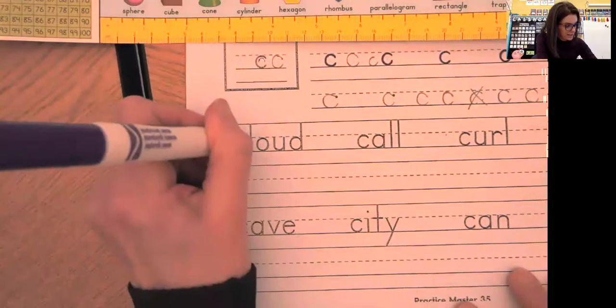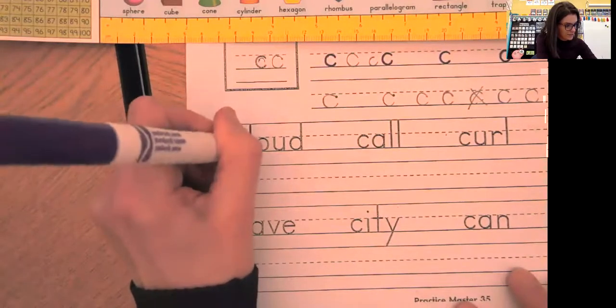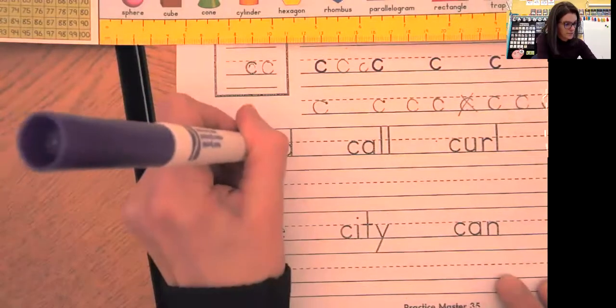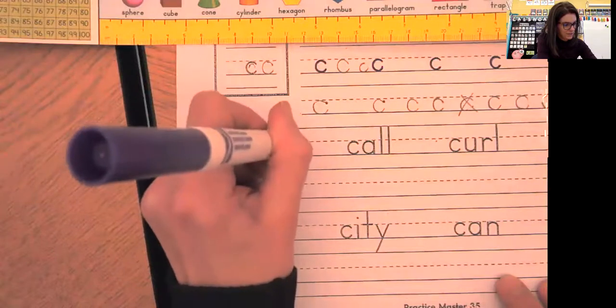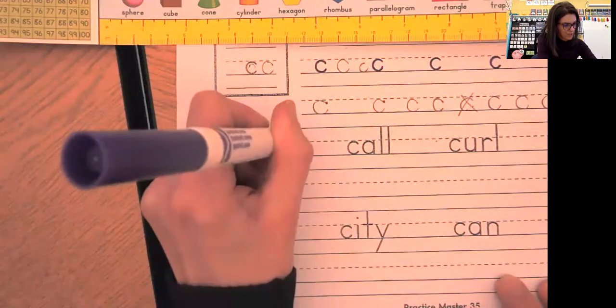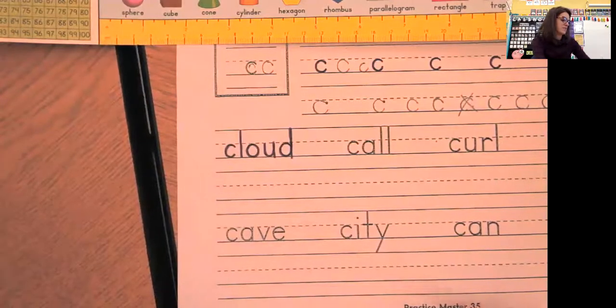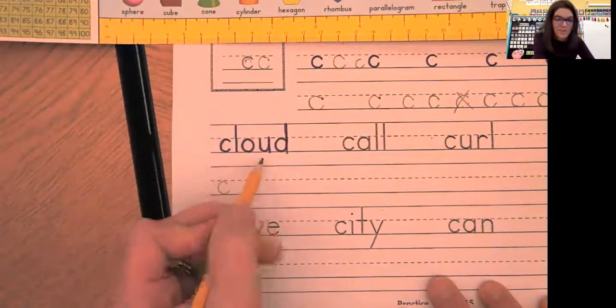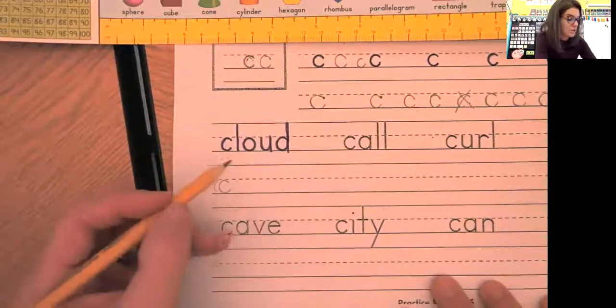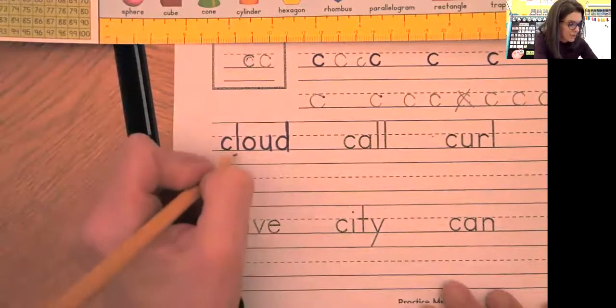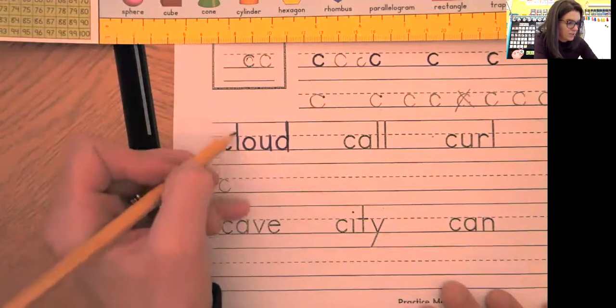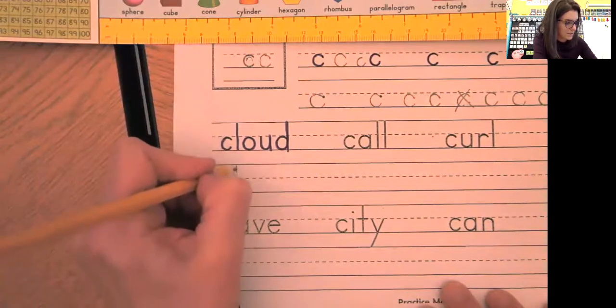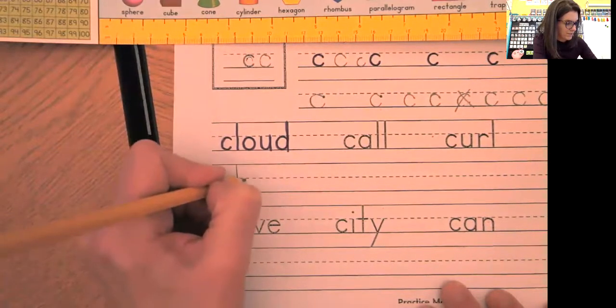So then you're going to get your marker. Trace your words that begin with C. We have cloud, call, curl, and close. And again, we trace so slow. We never go outside the black line. And then you're going to write each word. Now again, when you write each word, there's several letters that are not lowercase C. But I want you to look at each of those letters and think about how tall or short, where those lines and letters begin and end. So you can make yours look as close as possible to the one above.